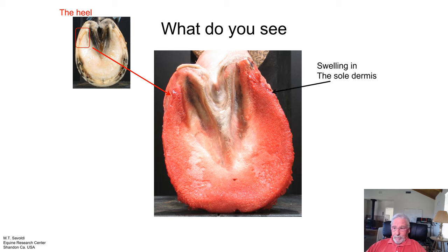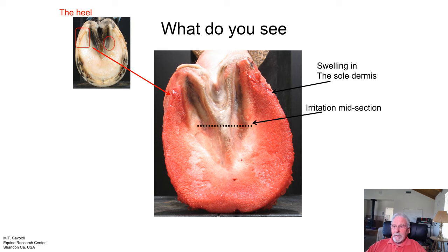Here's swelling to the sole dermis and rounding of the bone. Here's the irritation in the midsection — we talked about this area having stress and flattening out, and this is the irritation that's occurring inside.